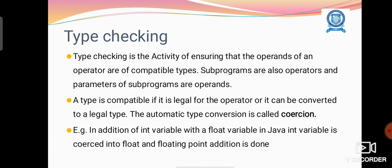Type checking is the activity of ensuring that the operands of an operator are of compatible types. Subprograms are also operators and parameters of subprograms are operands.